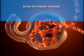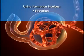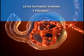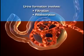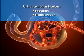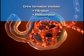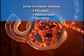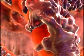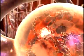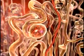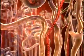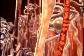Urine formation involves the filtration of the blood by the glomerulus to form an ultrafiltrate of urine, the tubular reabsorption of electrolytes and nutrients needed to maintain the constancy of the internal environment, and the secretion of waste materials. Filtration occurs as blood flows into the glomerulus from its afferent arteriole, and plasma moves through the glomerular capillaries into Bowman's space. From Bowman's space, the glomerular filtrate moves into the tubular segments of the nephron.